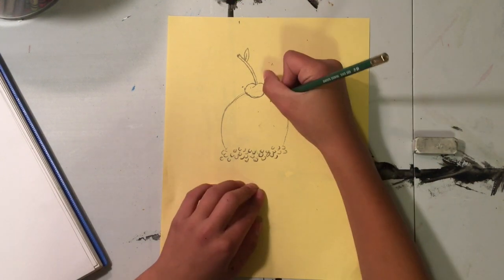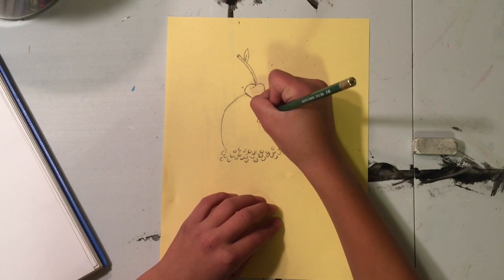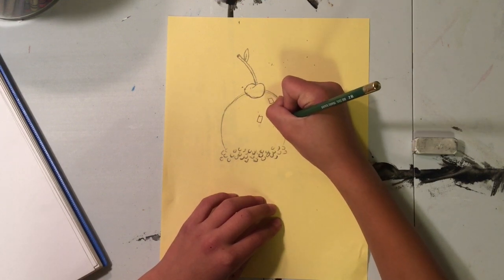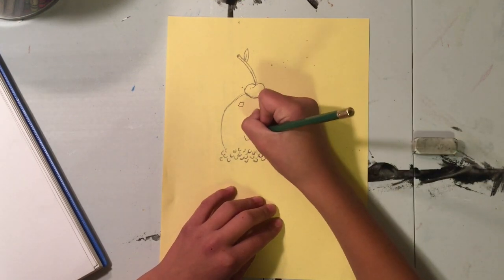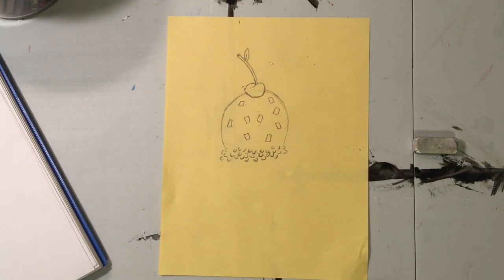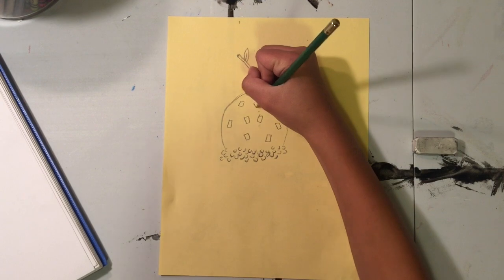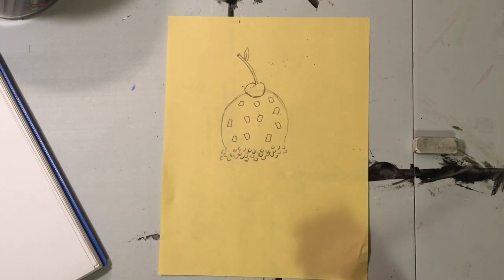So that's basically what my cherry is gonna look like. And then you can add little chocolate chips or whatever you want on top of your ice cream cone. I'm just adding the little chocolate chips. And once you have as many chocolate chips as you want up there, you can start on the ice cream cone.